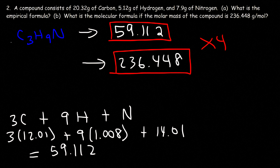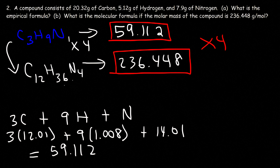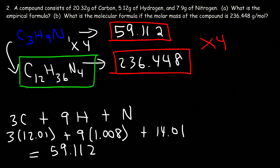So multiply the subscripts of the empirical formula by 4. 3 times 4 is 12, 9 times 4 is 36, and 1 times 4 is 4. The molecular formula is C12H36N4. Now you know how to find the empirical formula and the molecular formula, whether you're given the percent composition by mass or the grams of all the elements in the compound.